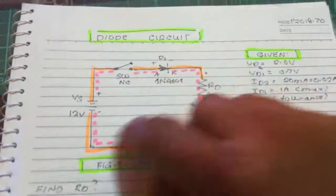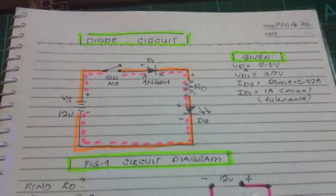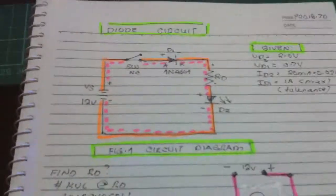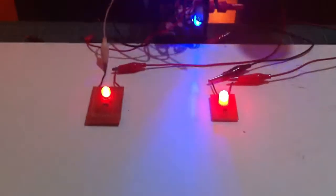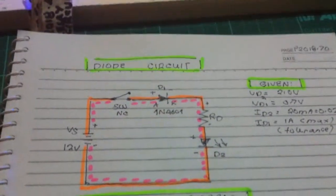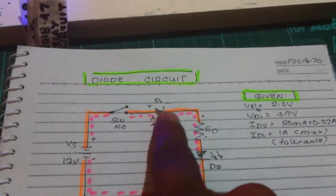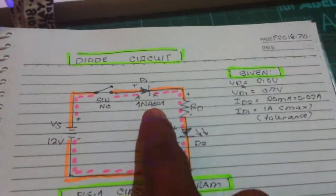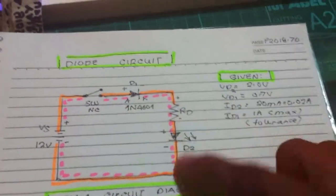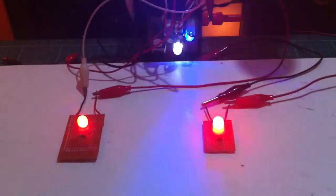Current flows from the positive terminal to the negative - that is conventional current flow, not electron flow. Now we have these two circuits: the LED circuit and the new diode circuit, where the diode is used for a switching application. When you connect the diode in the correct direction the current flows and it acts just like a switch. The circuit is working with the 1N4001 and LED in series.